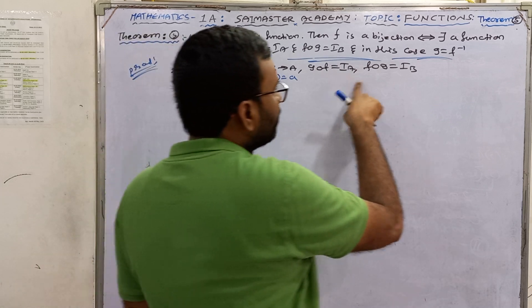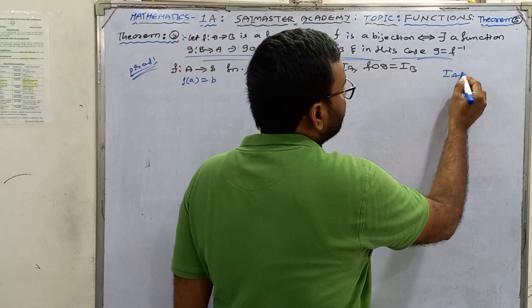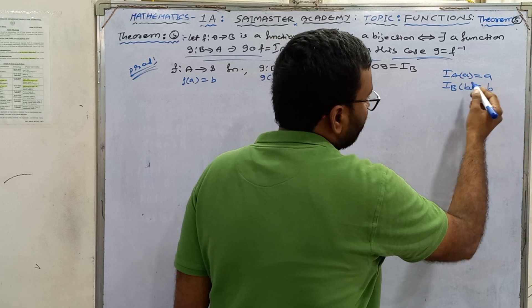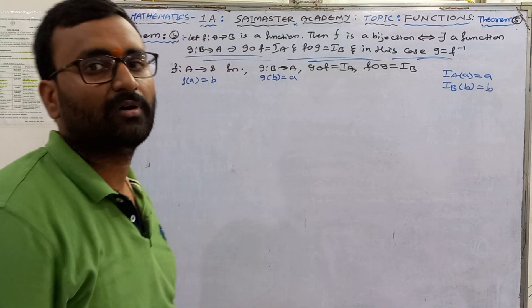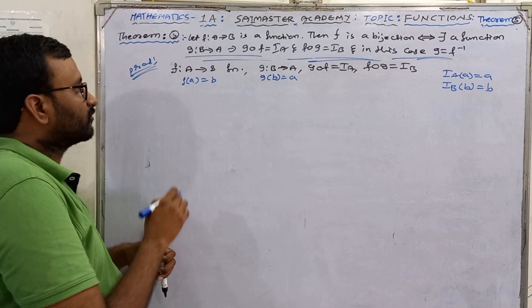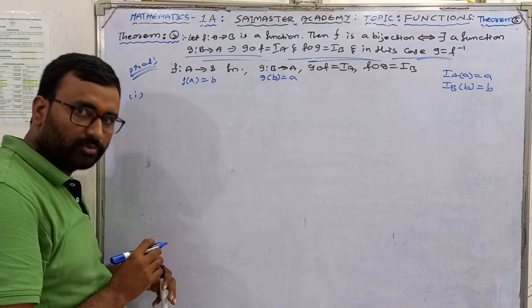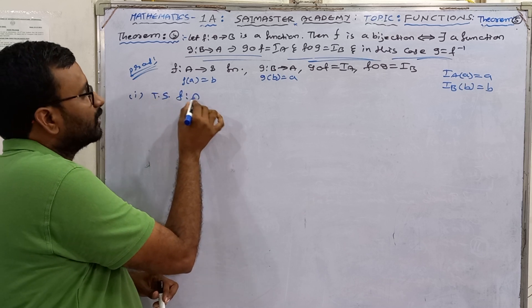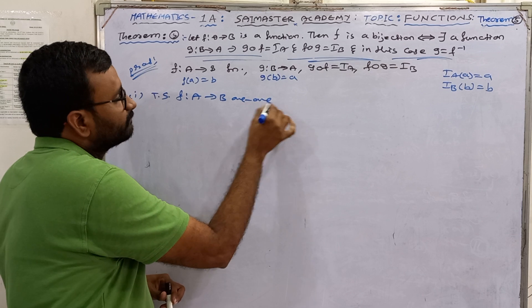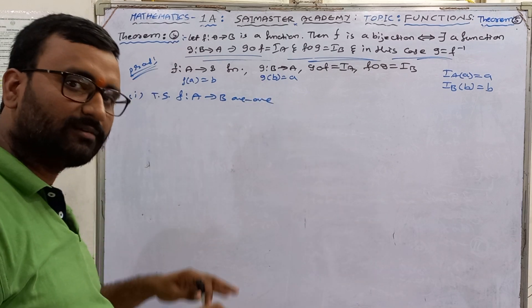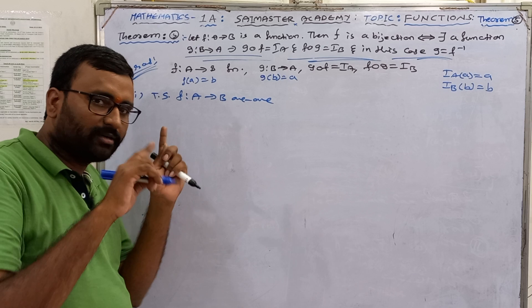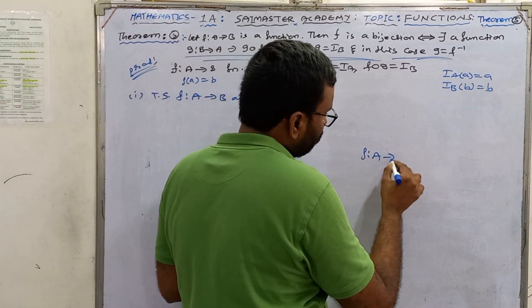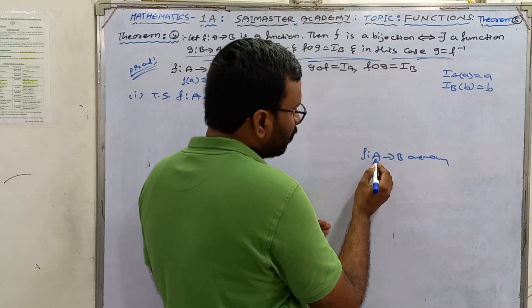To show one-one. Go to the definition. F from A to B one-one.